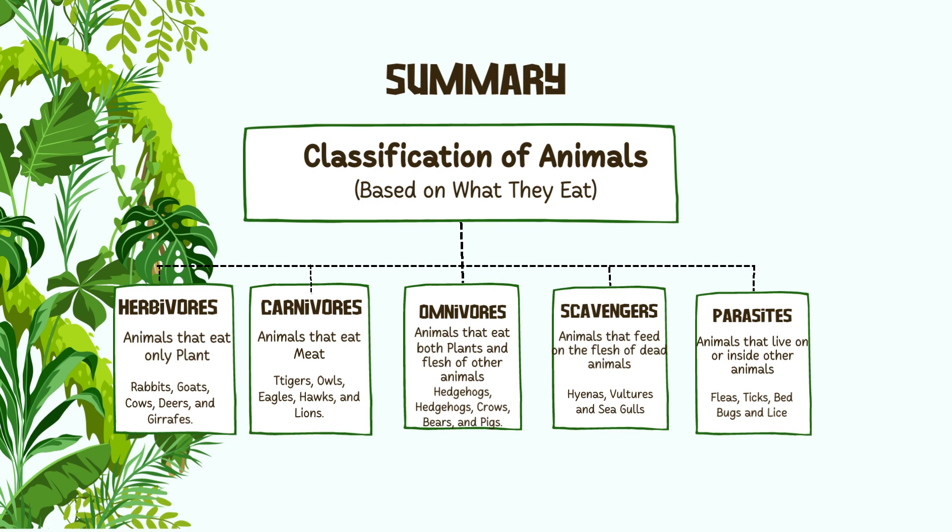Now let us summarize. Based on what they eat, animals are divided into herbivores, carnivores, omnivores, scavengers — animals that feed on the flesh of dead animals — and parasites that live on or inside other animals.